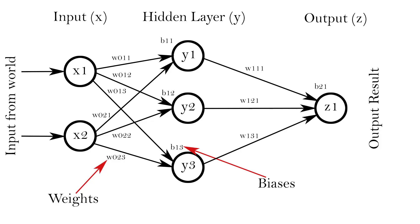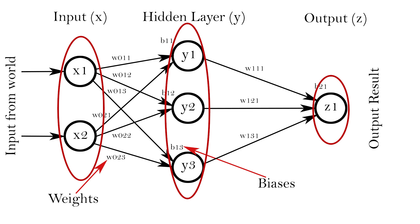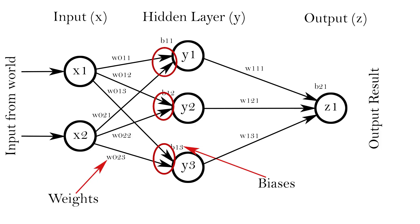Let's first examine why traditional neural networks are fine when small but become intractable when large. In this image, which shows about the simplest neural network that you can create, you can see we have two inputs, three nodes in the hidden layer, and one output node — six nodes altogether. If we connect everything up, there are six connections between layer X and layer Y and three from layer Y to layer Z, plus three bias nodes in layer Y and one in layer Z. That's a total of 13 connections for six nodes.